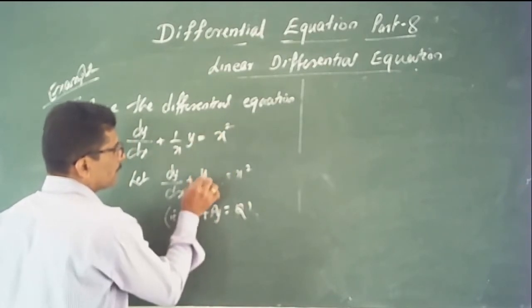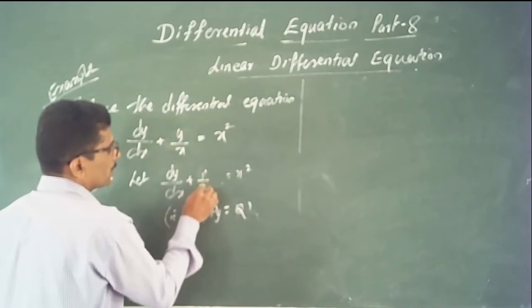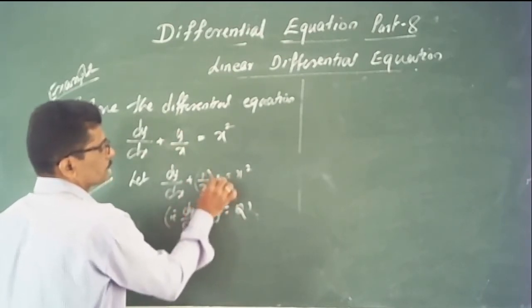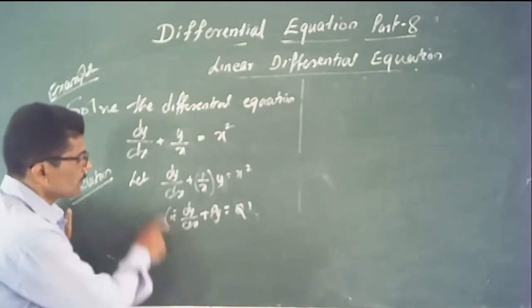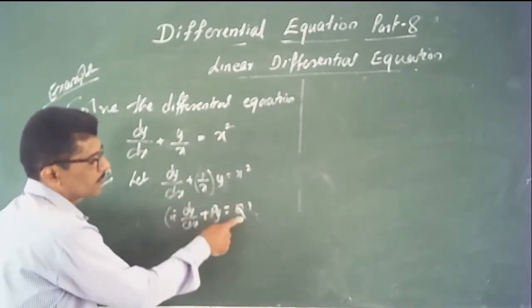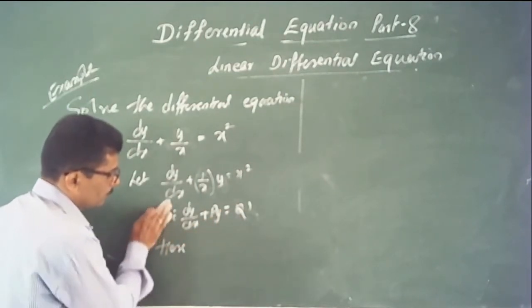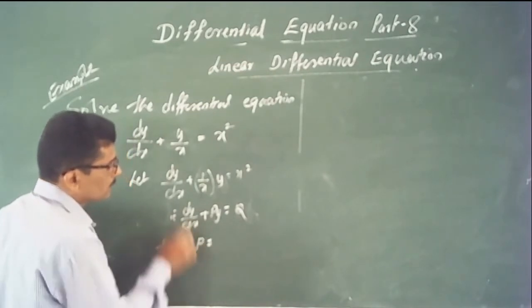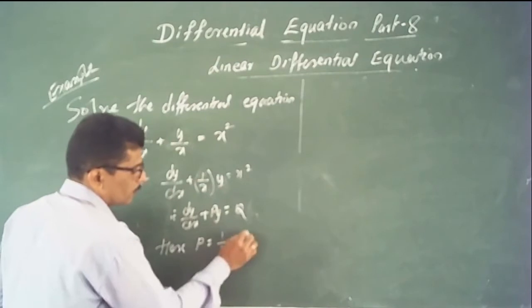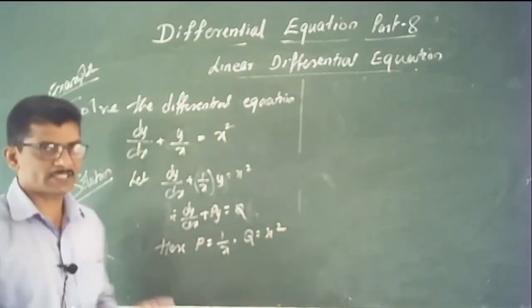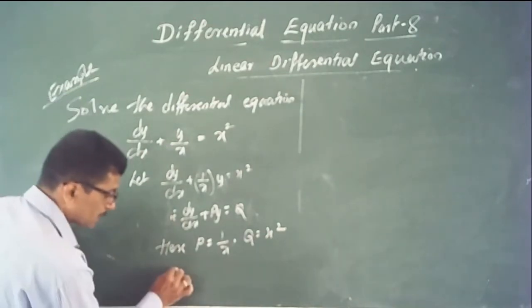Comparing with dy/dx + P·y = Q, the value of P is 1/x and the value of Q is x².